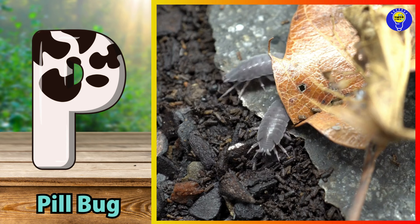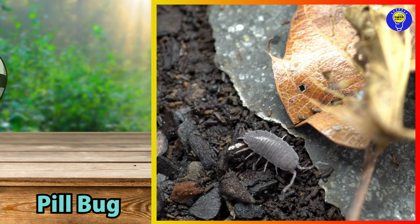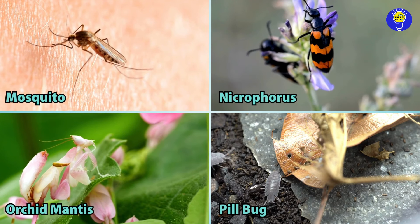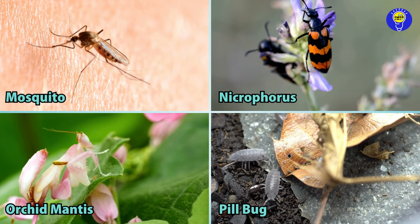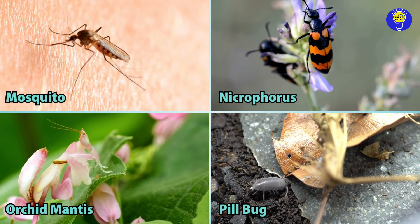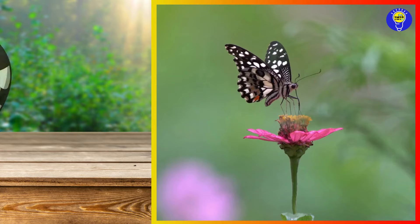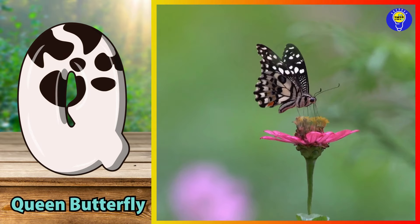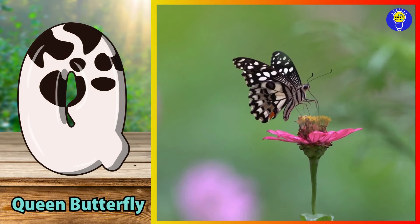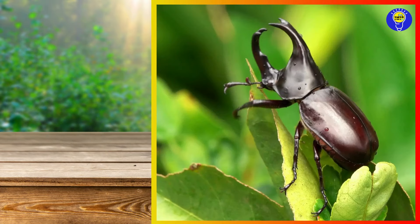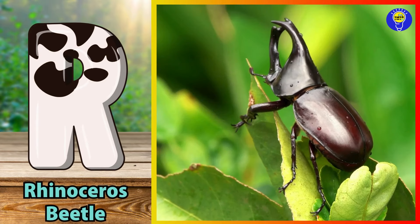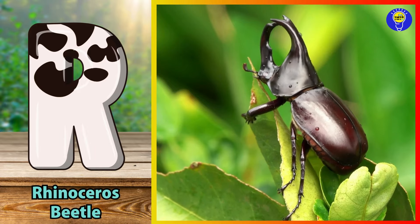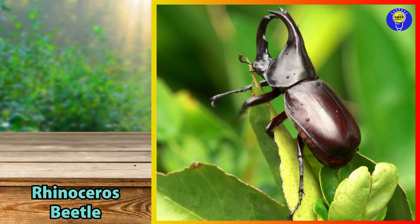P is for pill bug. P, p, pill bug. Q is for queen butterfly. Q, q, queen butterfly. R is for rhinoceros beetle. R, r, rhinoceros beetle.